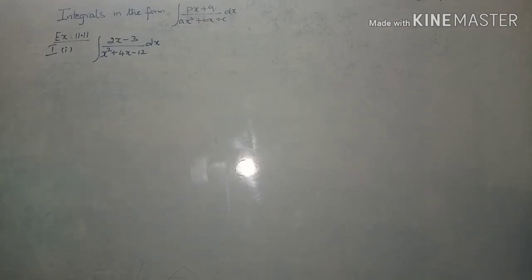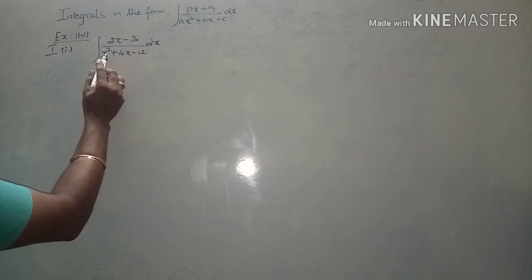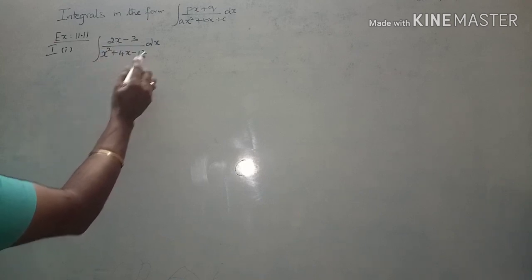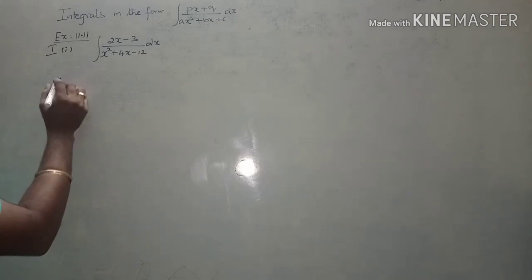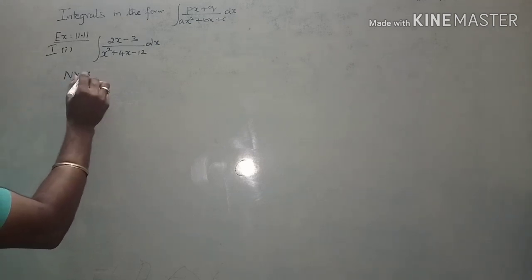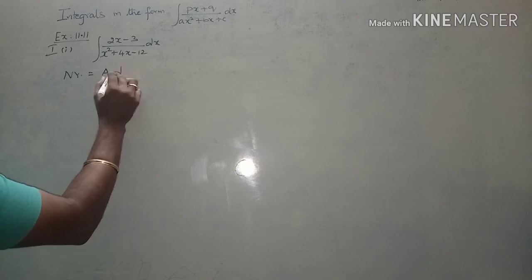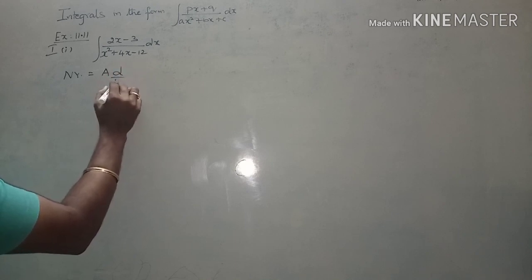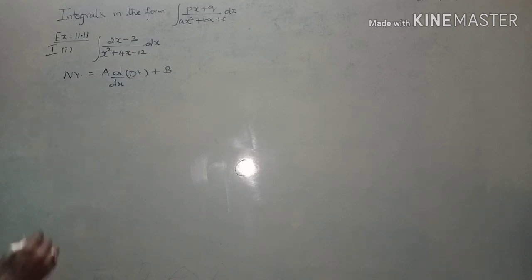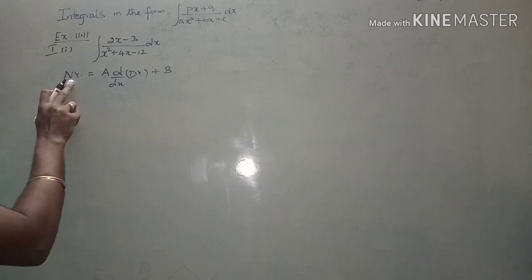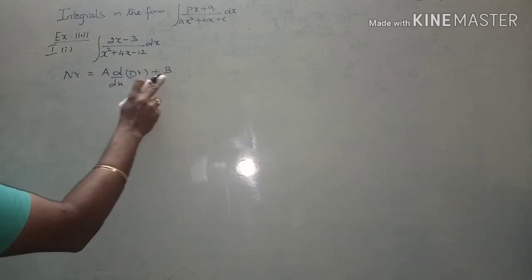For example, integrate (2x minus 3) divided by (x² + 4x minus 12) with respect to x. Step 1: write the numerator equal to some constant A times the derivative of the denominator, plus some constant B. So: numerator = A times (derivative of denominator) + B.